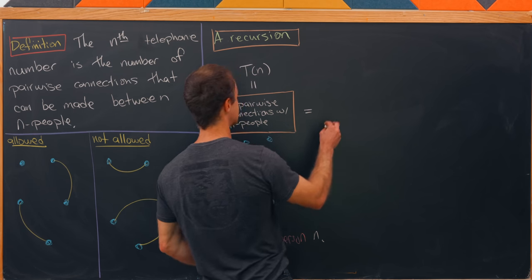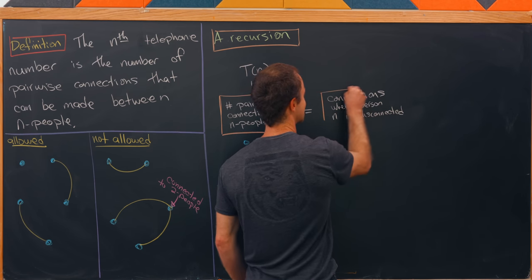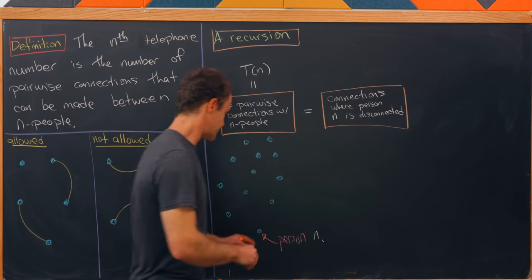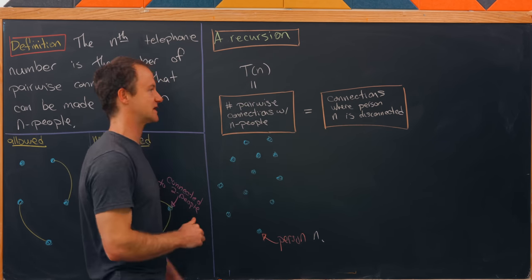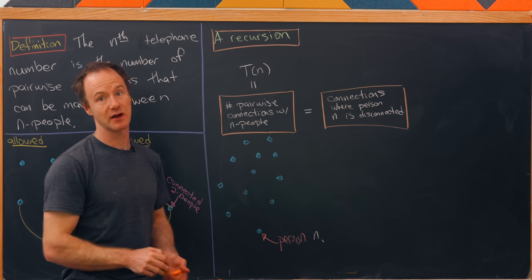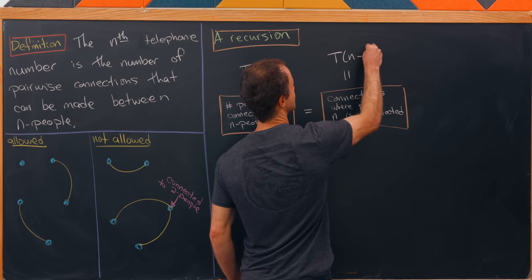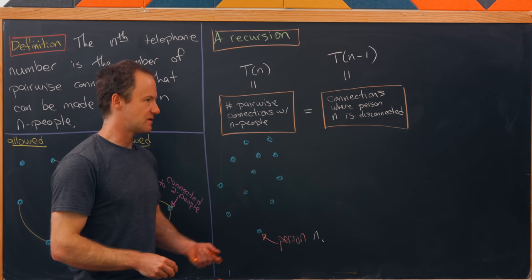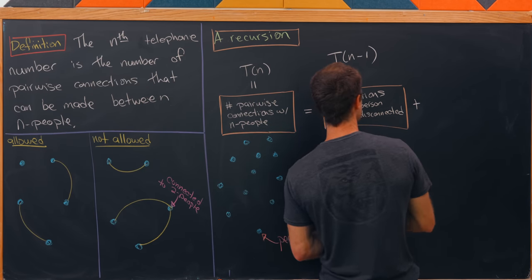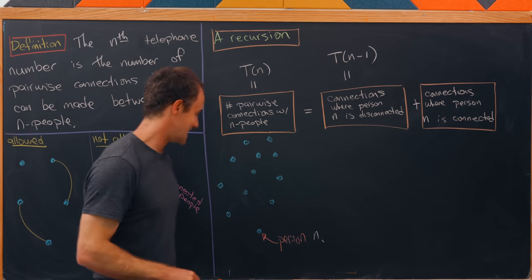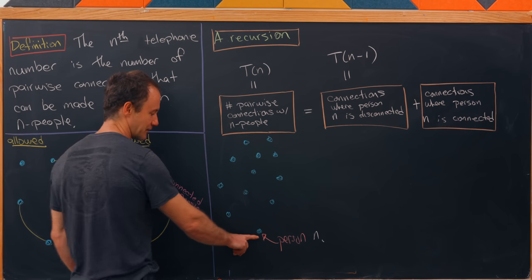We can break this into a couple of cases. The first case is the connections where person n is disconnected. If person n is disconnected, then we've got n minus one people to connect, and we know exactly how to count connections among n minus one people — that's t(n−1).